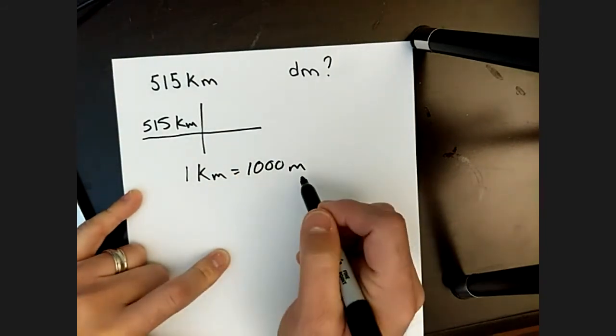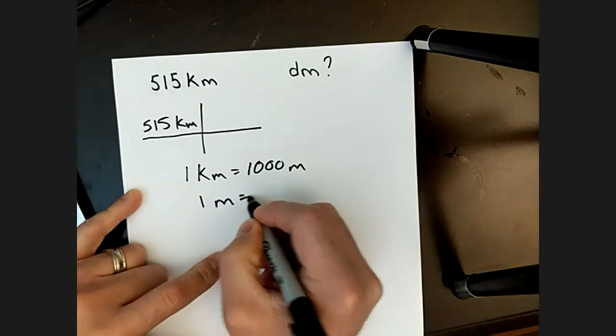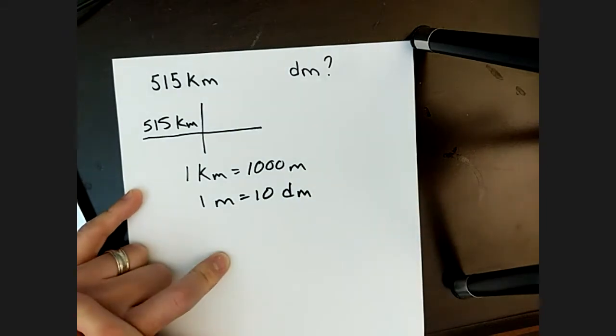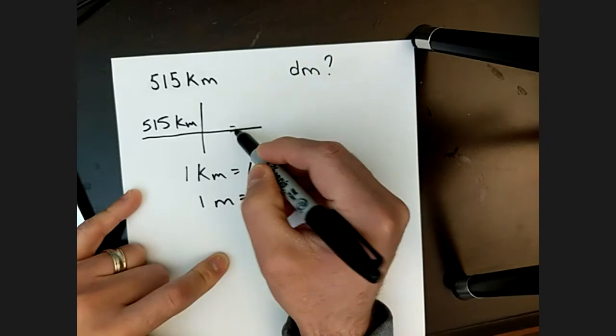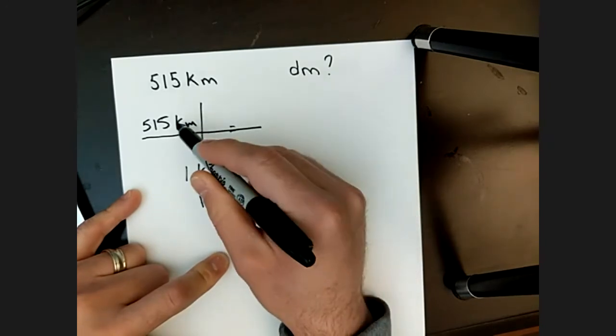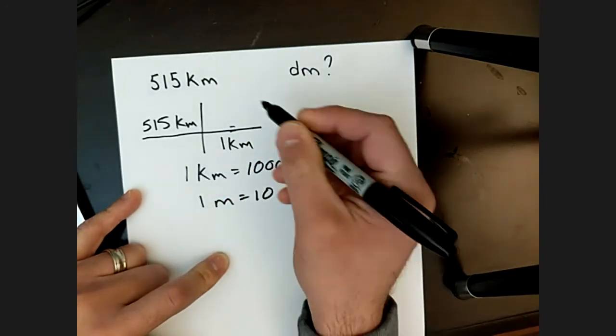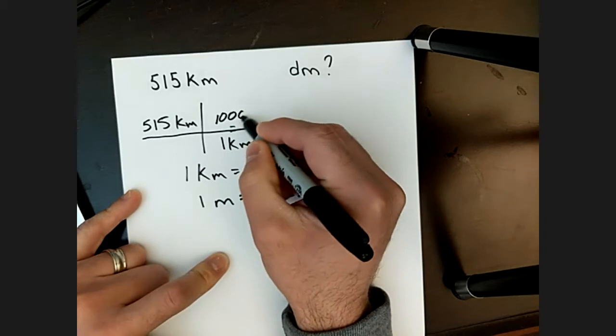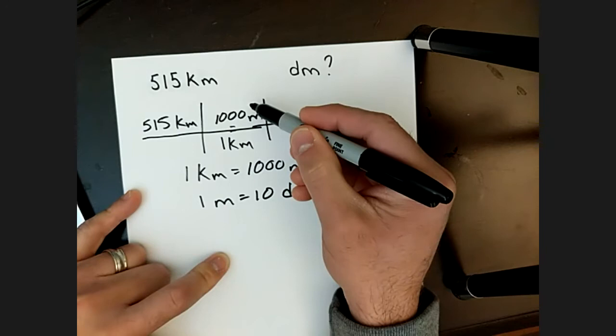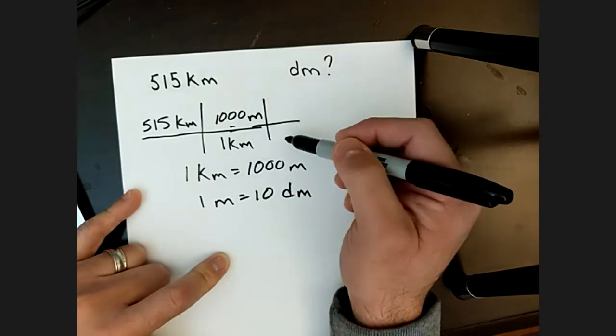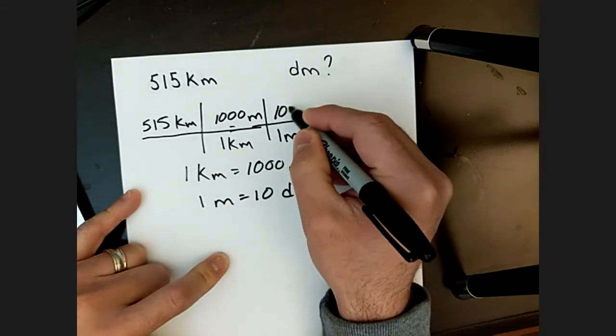So meter is one of our kind of base units here, and then we also know that in one meter, there are 10 decimeters. Essentially what I'm going to do is I'm going to use the top and the bottom as the equal sign. I'm going to set the unit opposite here. So one kilometer, and then I'm going to say it's equal to 1,000 meters. So what I'm converting from to what I'm converting to. And then in my last step here, one meter here is 10 decimeters.